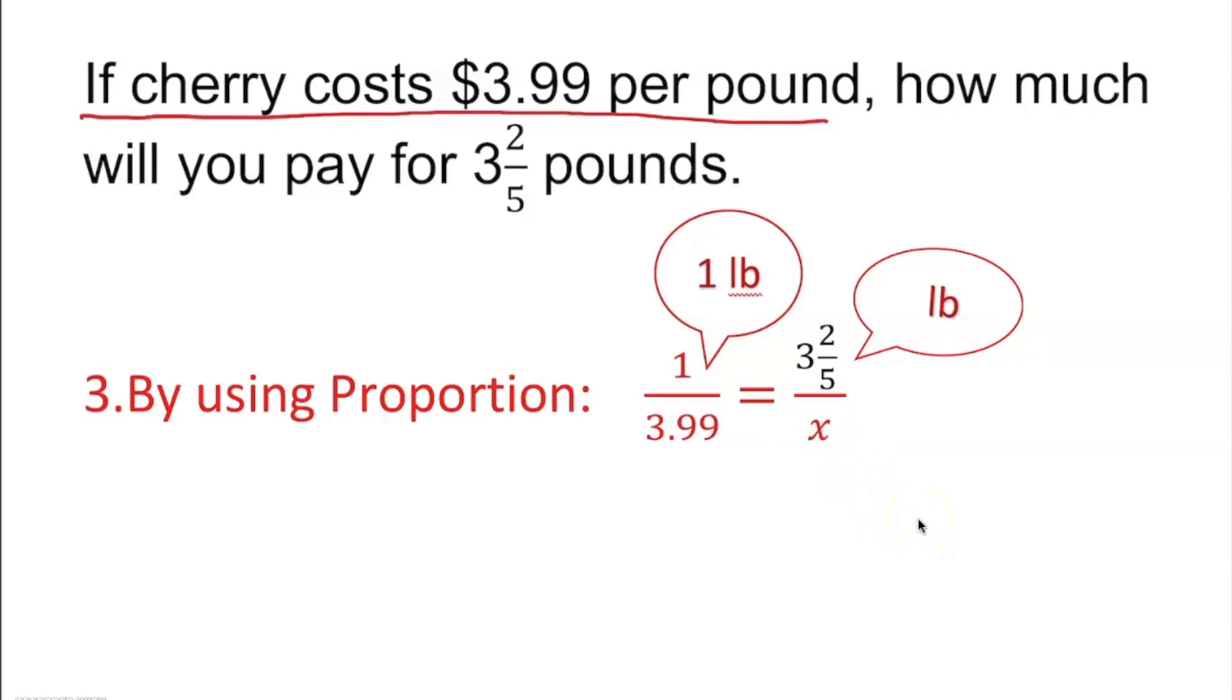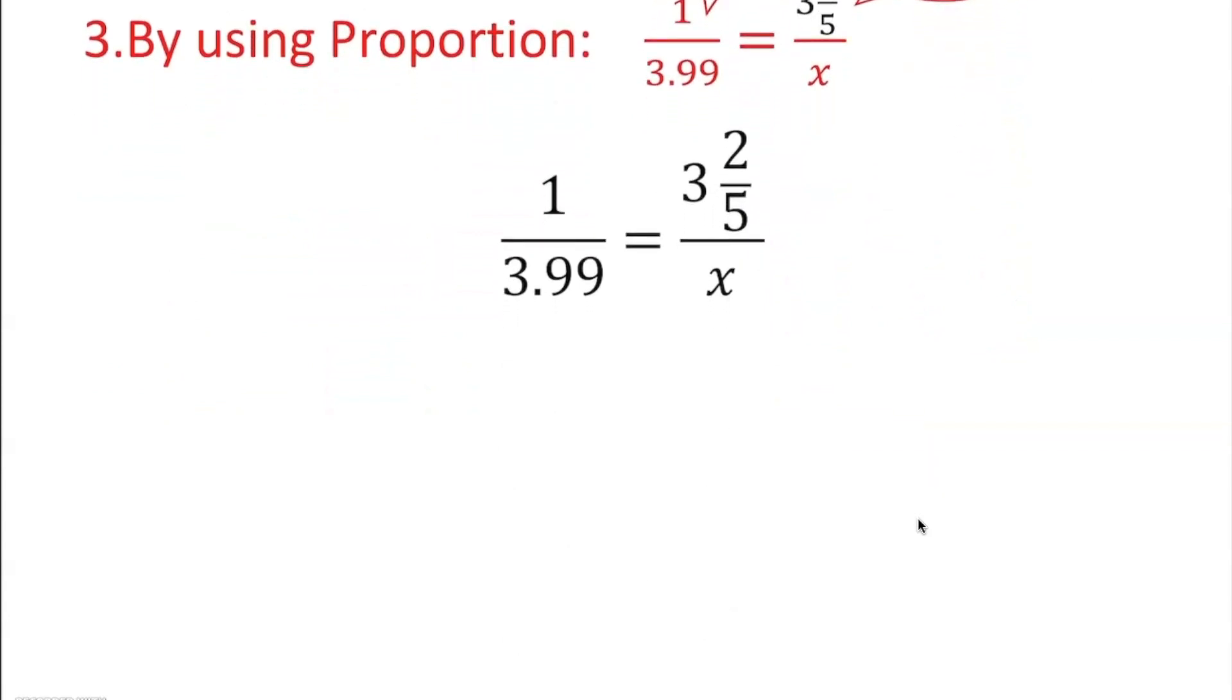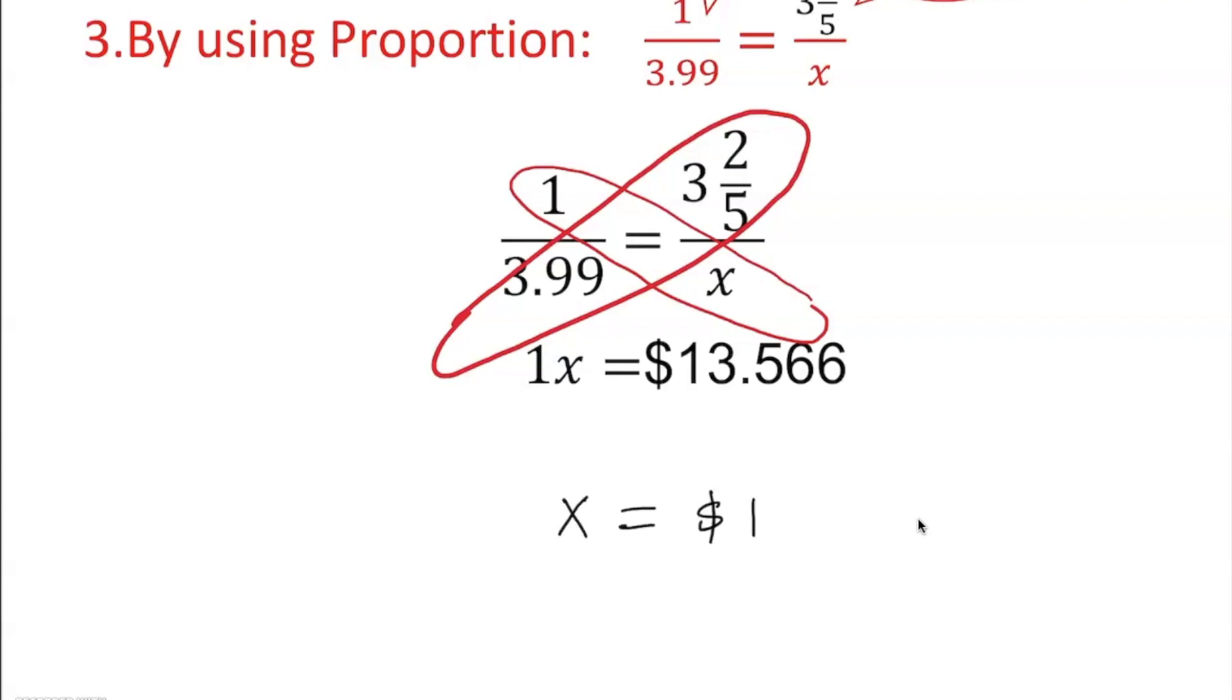Once we have that, we just cross product. Just like that. Because we're assuming two fractions are equal, we can cross product. So it's going to be 1x. 1 times x is 1x, equal to. We multiply this. It's going to give us 13.566. And obviously we're going to round it up. So x is equal to, approximately $13.57. Thank you.